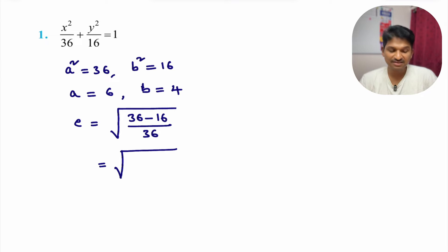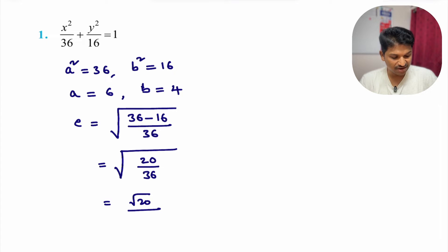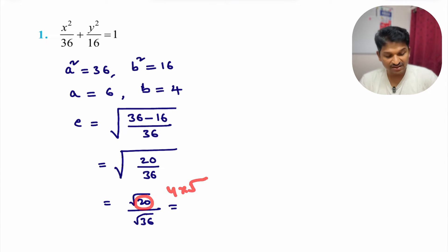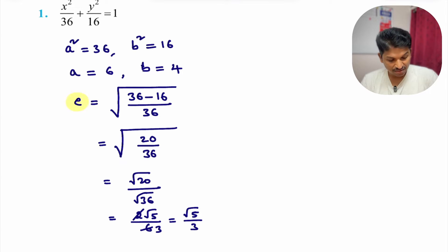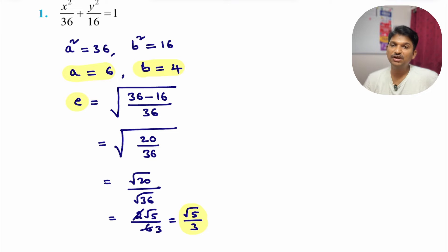36 minus 16 is 20. So e = √(20/36) = √20 / √36. Now √20 = 2√5 and √36 = 6. The 2 cancels, giving us eccentricity e = √5 / 3. So now I know: a = 6, b = 4, and e = √5/3.